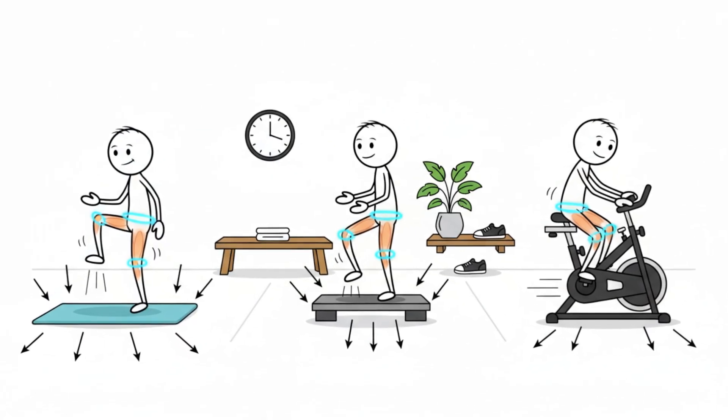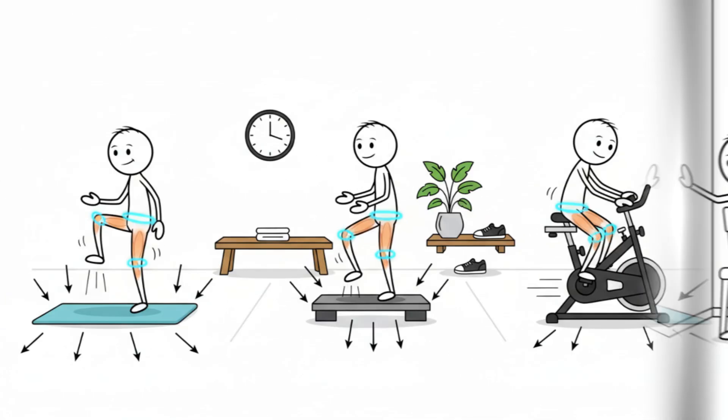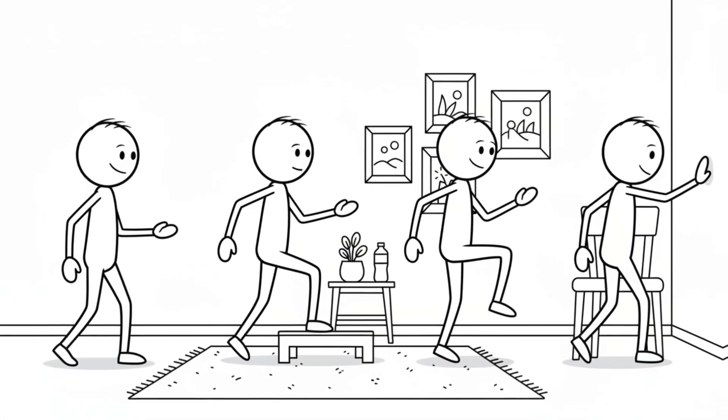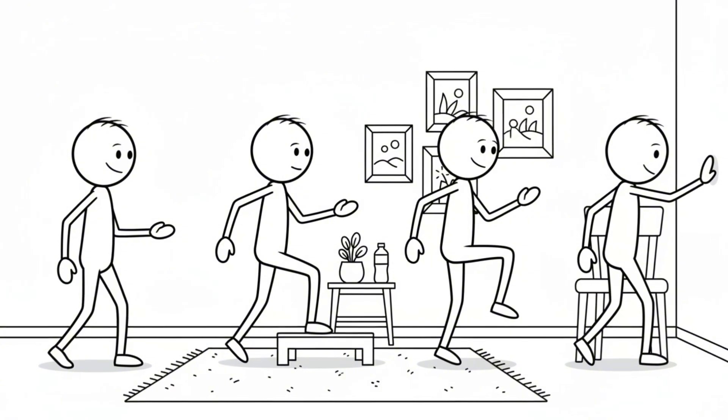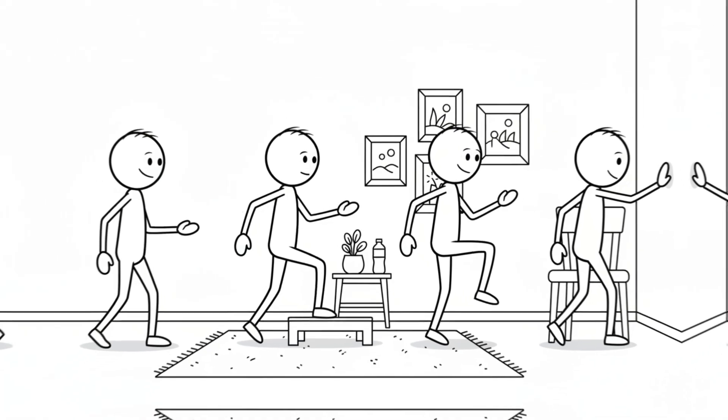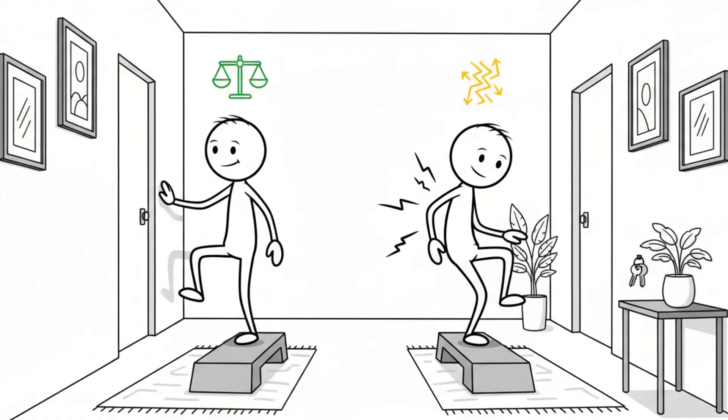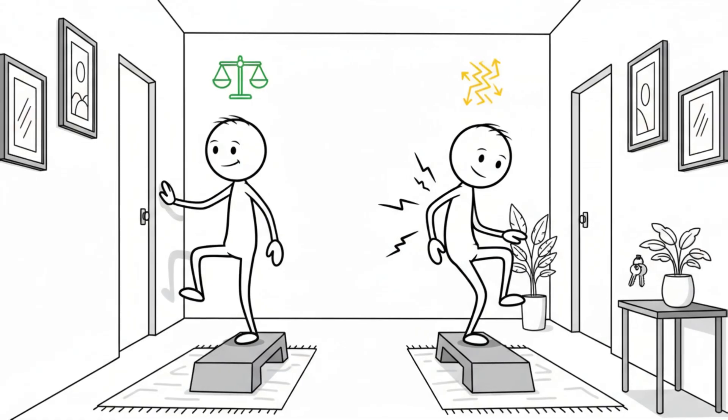Consistent practice can also improve mobility and coordination. If balance is an issue, perform the exercises near a wall or stable object. Stability is important because sudden compensations can unintentionally increase intensity, exactly what we're trying to avoid. A smooth, predictable movement pattern keeps you in the correct physiological range.